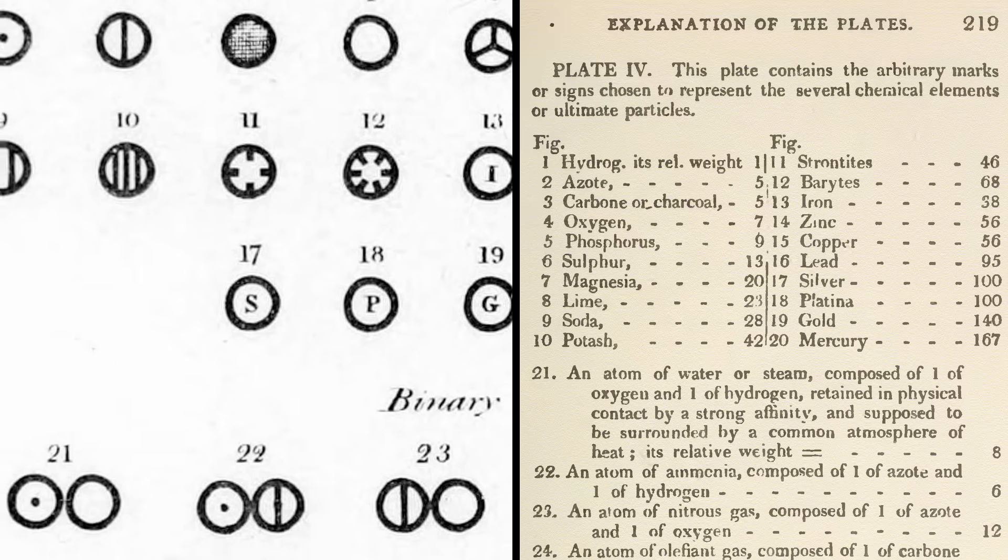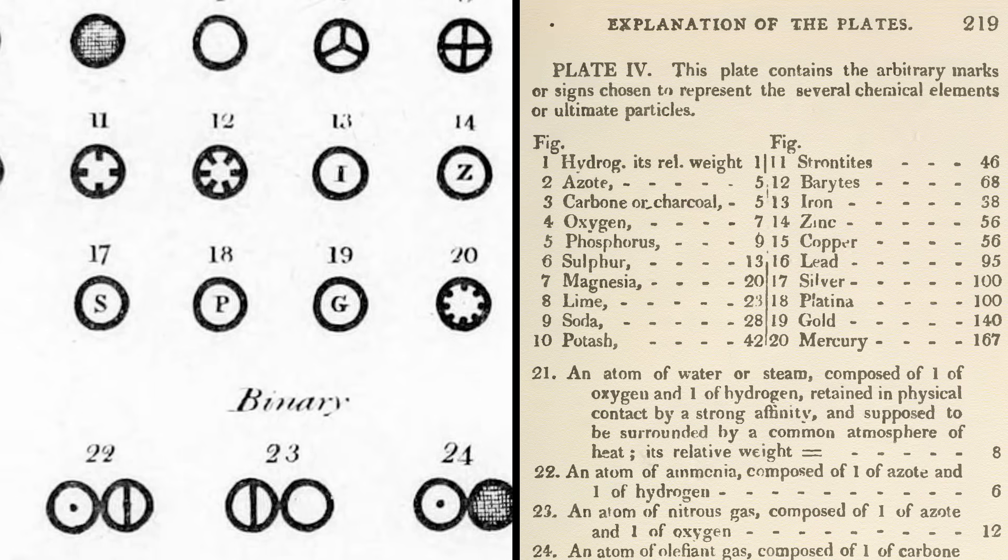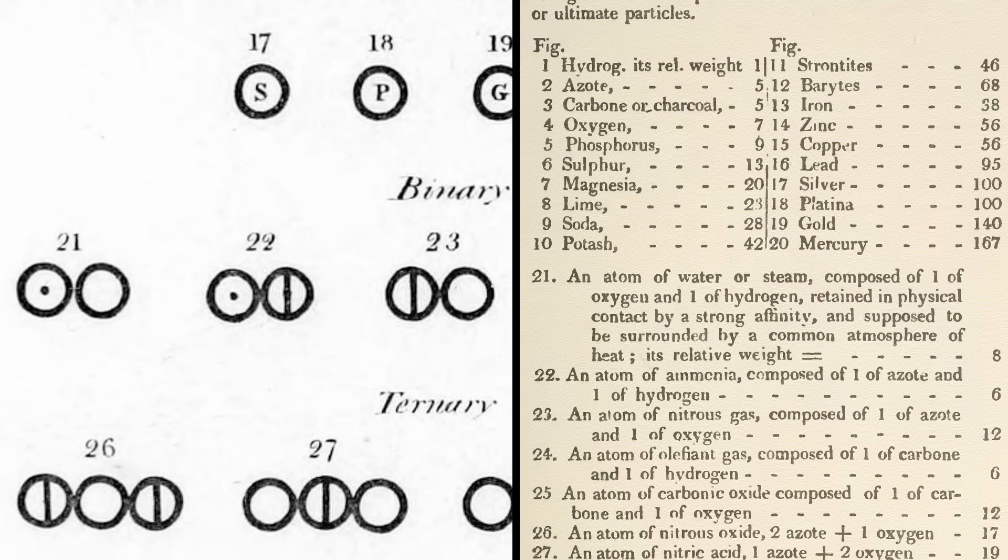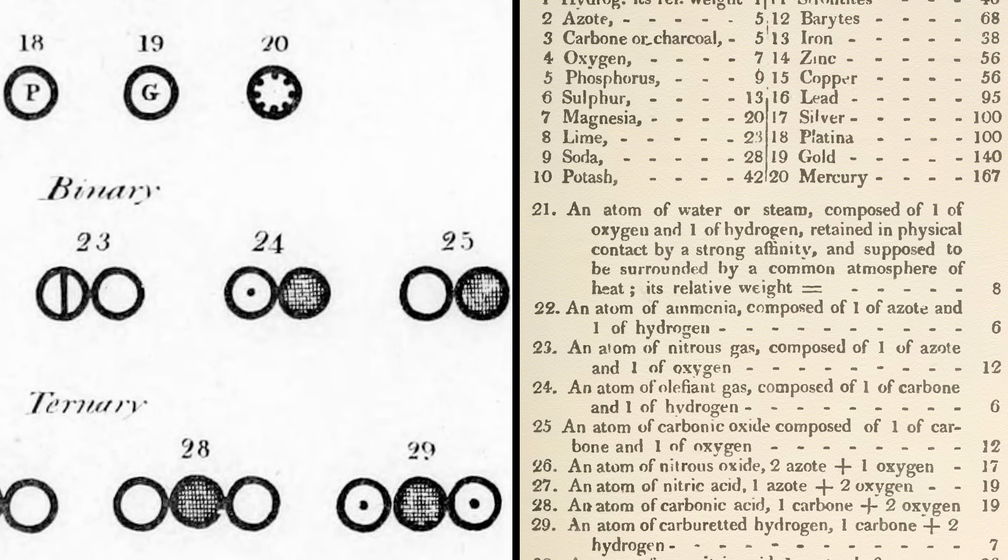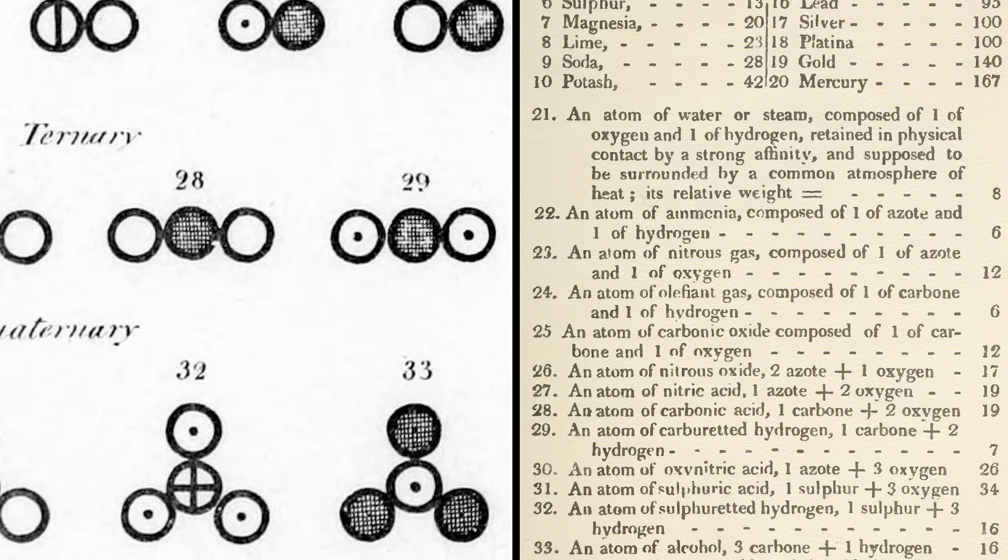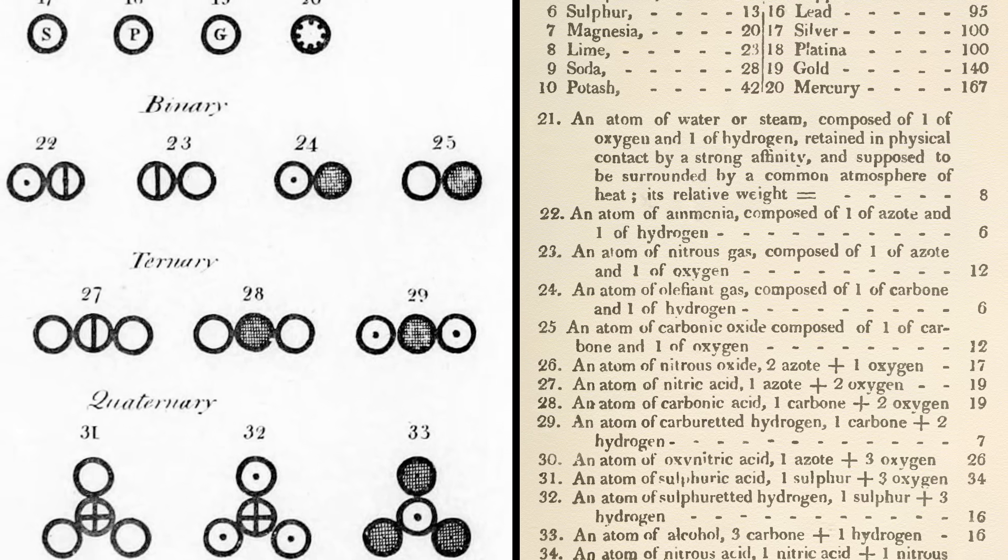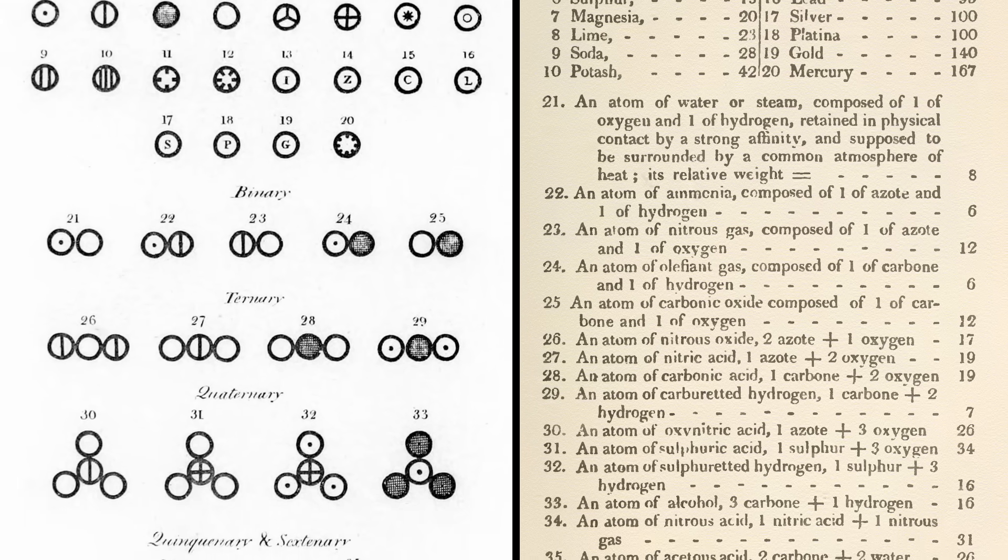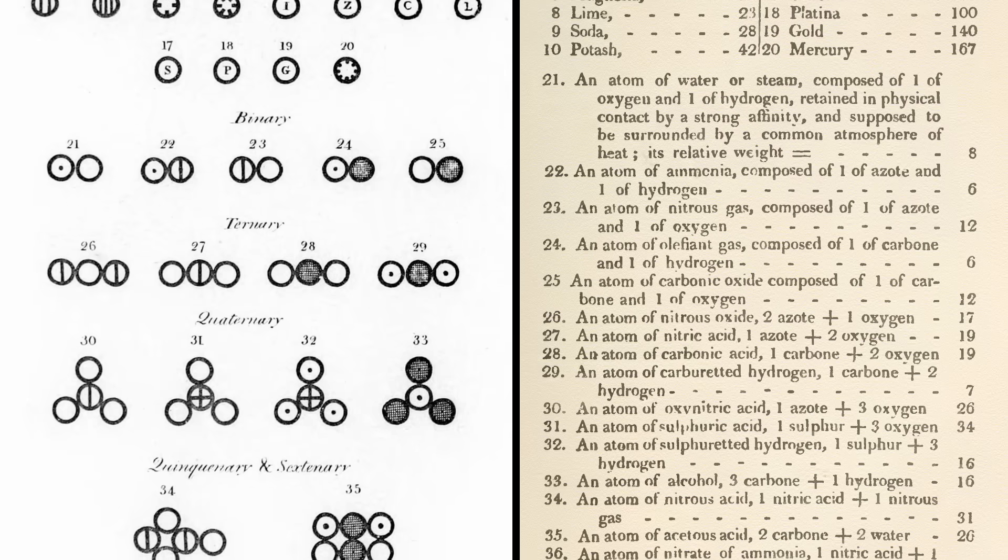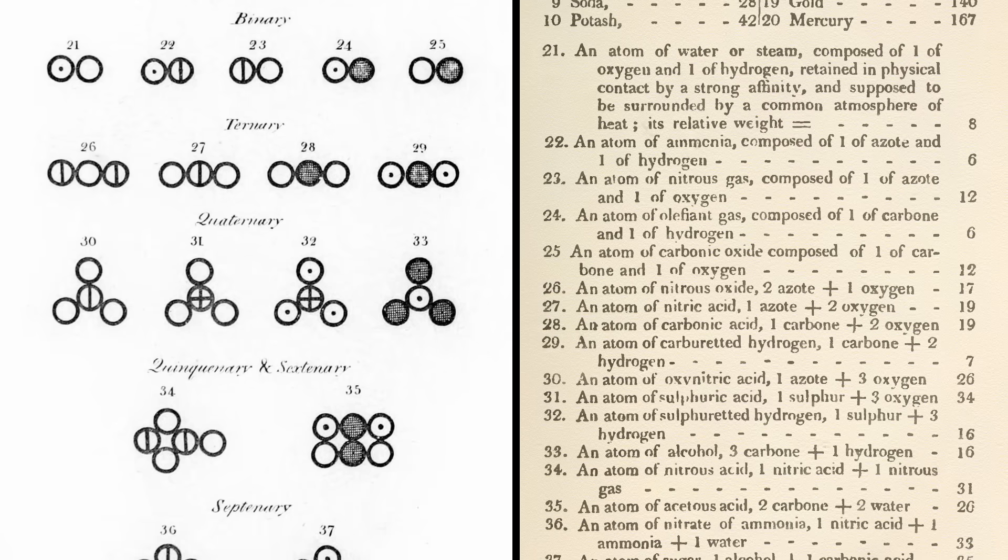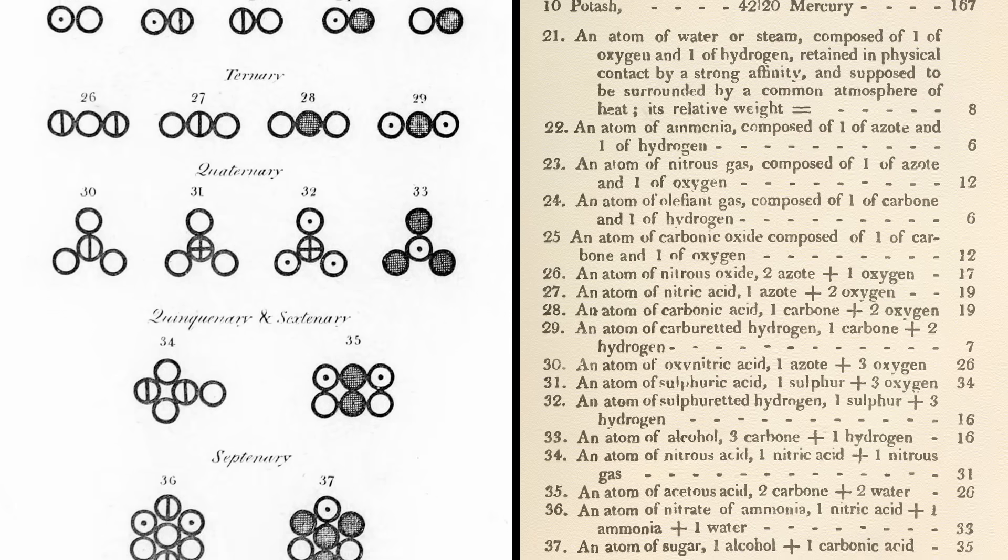Dalton also listed a few chemical compounds, starting from binary, or bonds of two elements, and moving to ternary, or bonds of three elements, quaternary, for bonds of four elements, and so on. Even though a lot of these elements and compounds are off in terms of weight, and also in terms of composition, given that he obtained these results through merely weighing volumes of gases and chemical compounds, Dalton's accuracy with these predictions in this table is quite remarkable.